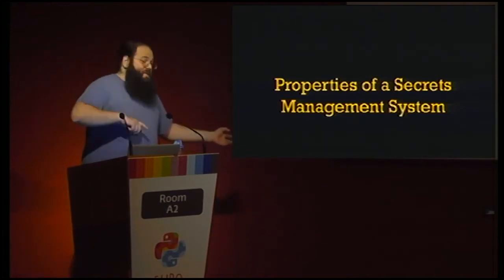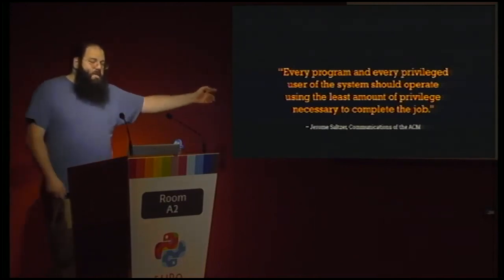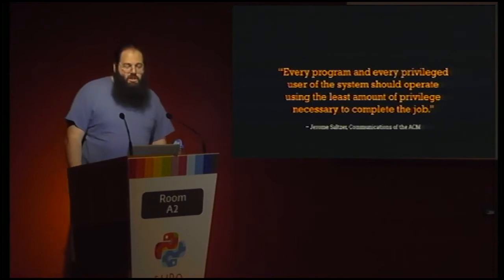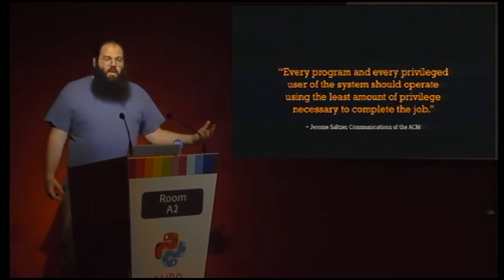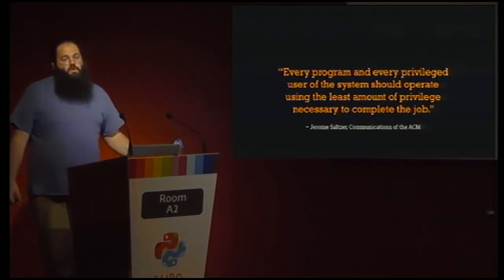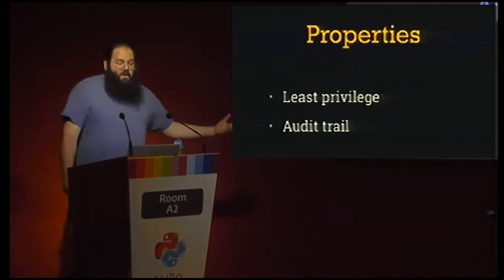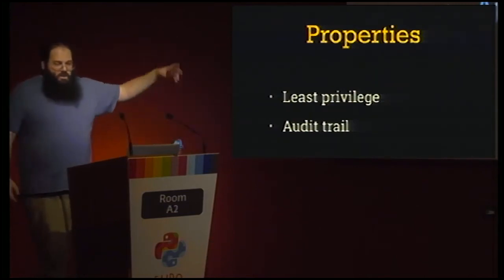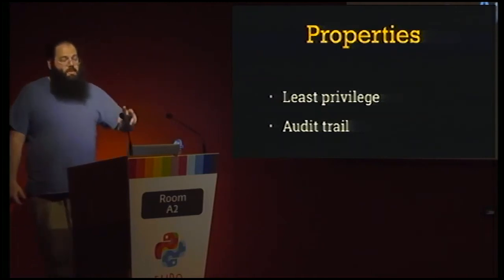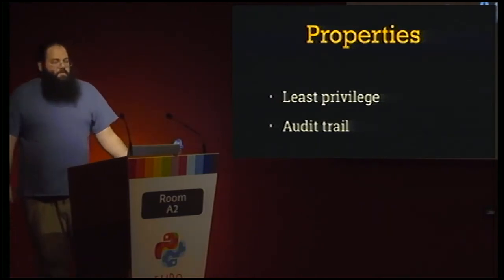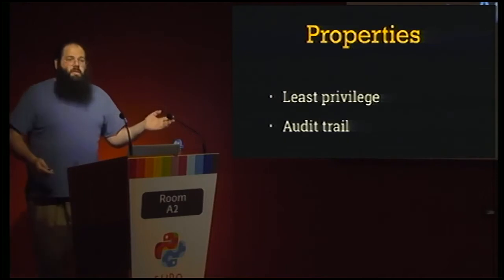Let's talk about the properties of secrets management systems. The principle of least access or least privilege, attributed to Jerry Saltzer in a 1974 ACM paper, is common sense but often ignored. In short, a service or tool should have access only to the secrets it requires and nothing else. Every secrets management platform should be judged on two main points: the principle of least privilege, and how much audit information is recorded so that when something goes wrong, you can sort out what happened.